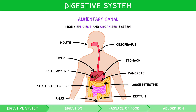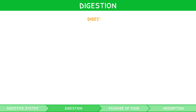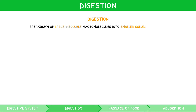Throughout the digestive tract, there are a number of enzymes acting at each of these locations to aid the breakdown of food, known as digestion. Digestion is formally defined as the breakdown of large insoluble macromolecules into smaller soluble monomers. The principal enzymes used are carbohydrases, lipases, and proteases.